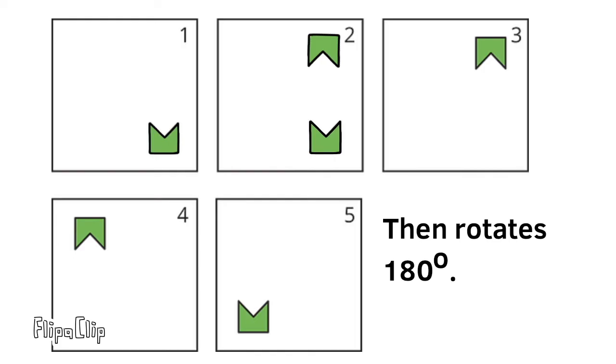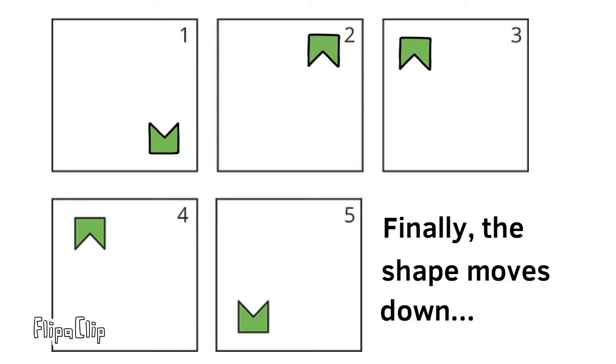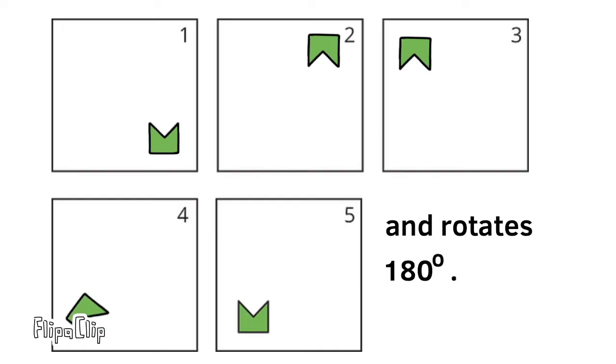For the shape to get from the frame 3 position to the frame 4 position, the shape moves to the left. And finally, for the shape to get from the frame 4 position to the frame 5 position, it moves down and rotates 180 degrees.